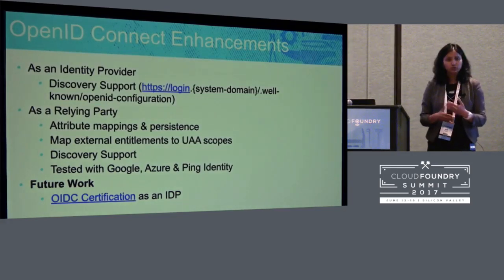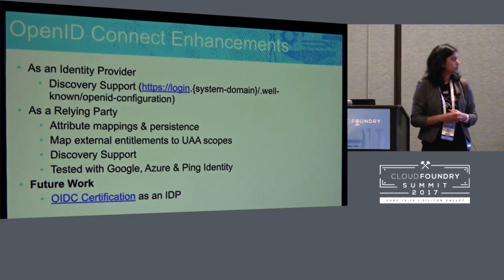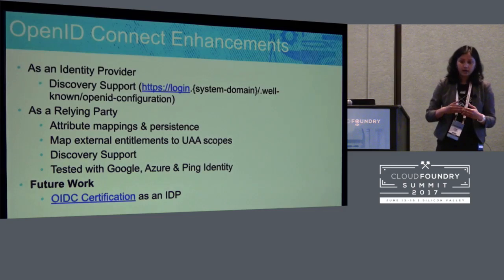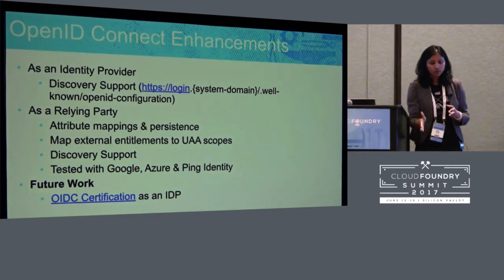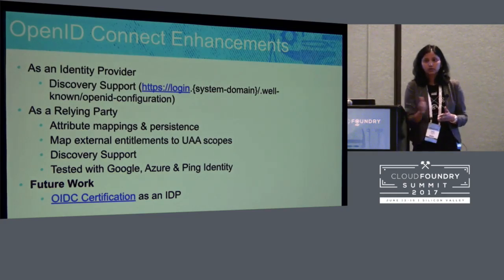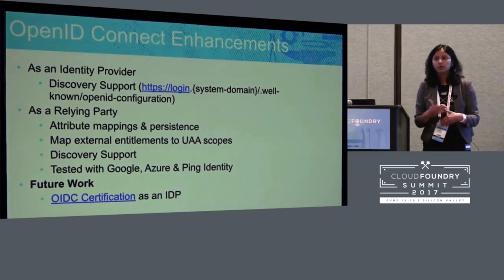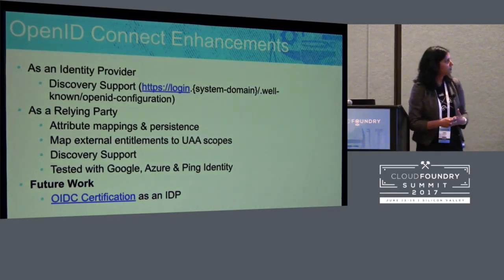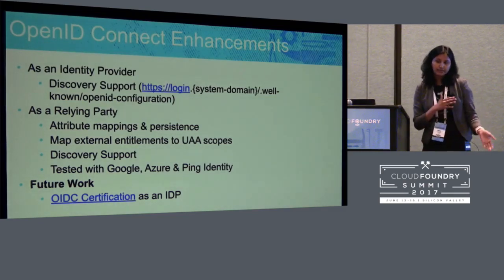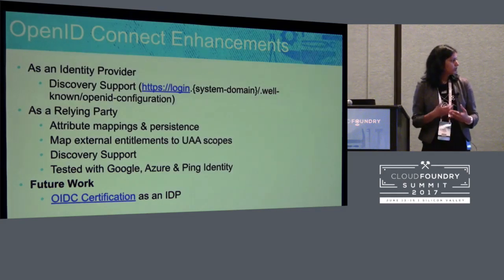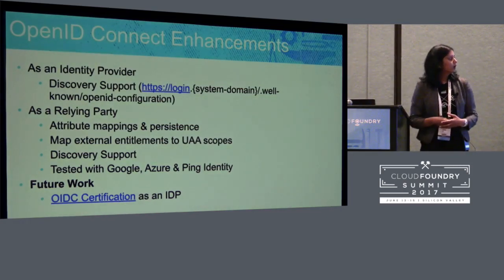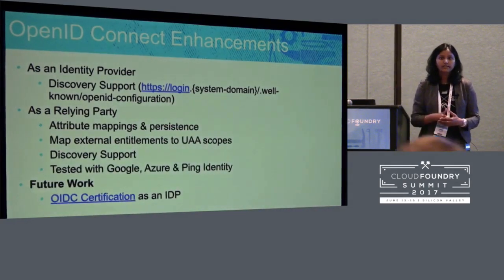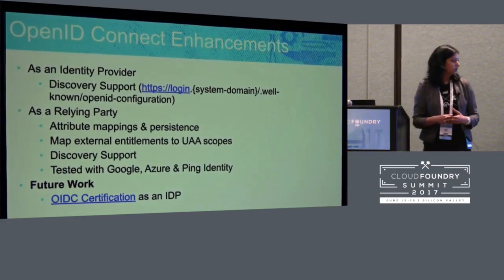Finally, on the relying party side, we also support discovery of external OpenID Connect providers. Similar to how we do discovery when we are an IDP, if we are a relying party you can specify the URL to your OIDC provider and we can discover the rest of the information — no need to specifically say where the token key is, what the issuer is, or what the token URL is. It just simplifies onboarding and lifecycle management for the provider. For future work, we are confident we can go ahead and get an OIDC certification, a program run by the OIDC Foundation to certify that UAA supports the OIDC profiles as an identity provider, and will eventually get the relying party certification as well.